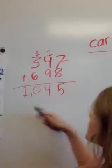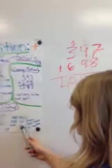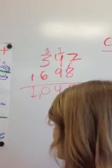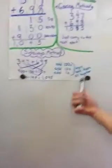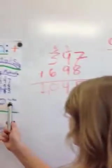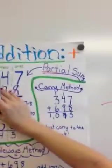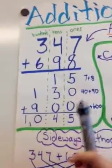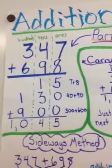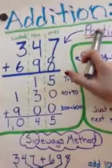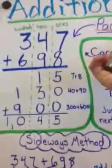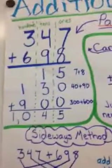But the weird part is they all... So this is the sideways method. You can do that or that, or what Hannah did. And then that's the carry method. Carry method right there. So here's the carry method, and partial sums. And hundreds, tens, ones. And so you could do 7 plus 8, 40 plus 90, 300 plus 600. And we were doing addition partial sums.